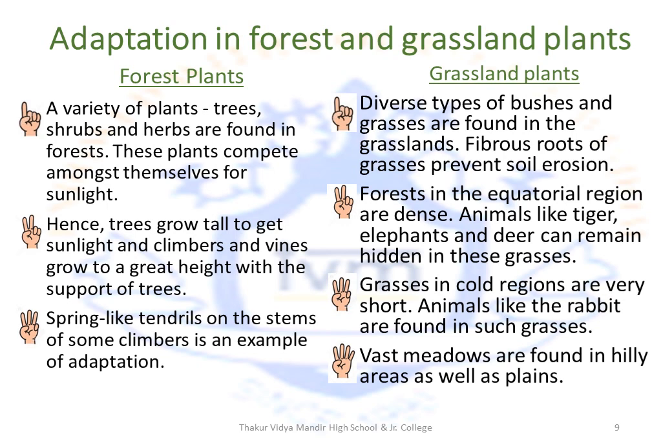Forests in equatorial regions are dense — animals like tigers, elephants and deer can remain hidden in these grasses. The grasses in cold regions are very short, and animals like rabbits are found in such grasses. Vast meadows are found in hilly areas and plains. A meadow is basically a piece of low ground near a river — a piece of grassland or pasture especially used for hay and grazing.